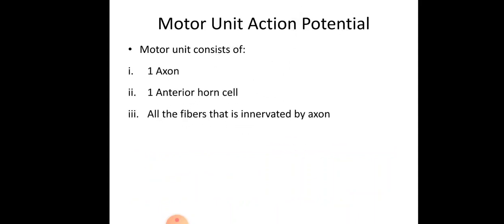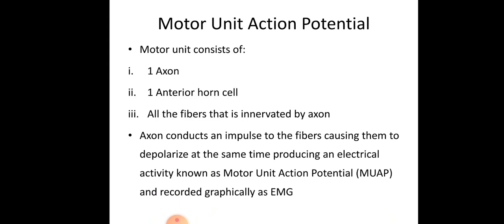Now coming to motor unit action potential. A motor unit consists of one axon, one anterior horn cell, and all the fibers it is innervating. The axon conducts an impulse to the fibers, causing them to depolarize at the same time, producing electrical activity known as motor unit action potential, or MUAP. This is what is measured and recorded by your EMG.